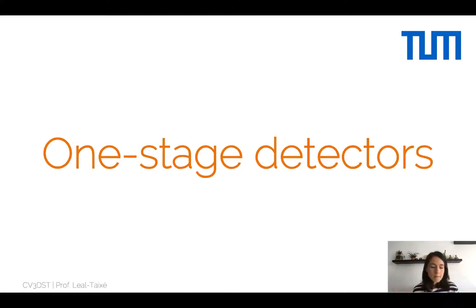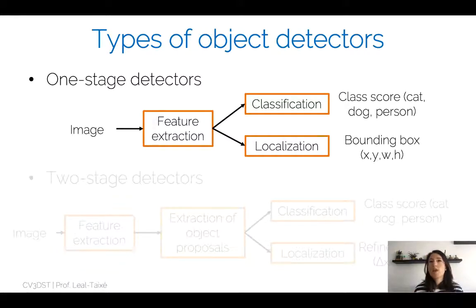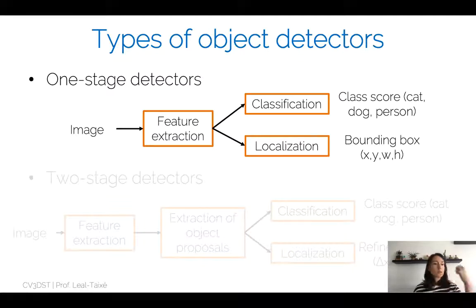The RPN is a strong step towards one-stage detectors. The main difference is that one-stage detectors go directly from image to classification and localization of bounding boxes, without a separate proposal pruning stage. This has advantages and disadvantages, but the primary advantage is that one-stage detectors are incredibly fast.